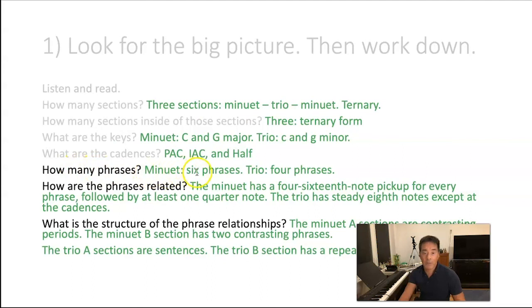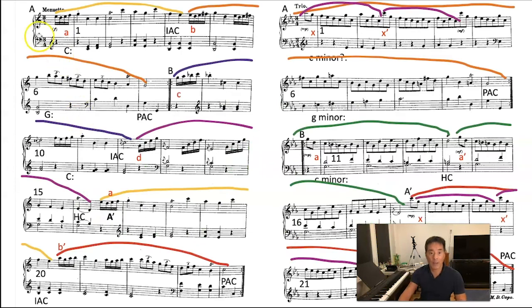So answering these questions. How many phrases. The first one, the minuet has six. The trio has four. How are they related? Well the minuet has this four sixteenth note pickup for every phrase. Followed by a quarter note. I'll go back and show you. And the trio has steady eighth notes except at the cadences. So going back and looking at that. Notice, ba-da-da-da-da-dum. Ba-da-da-da-da-dum. So every one of these phrases starts the same way, which could be a little bit confusing in terms of following the form. And when you see other Haydn pieces, they do have rather ambiguous sometimes structures.